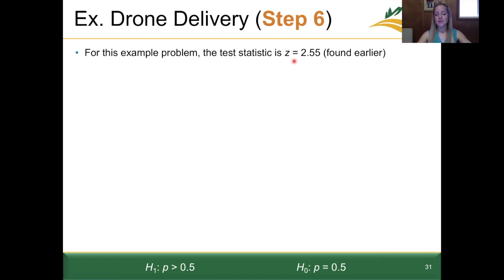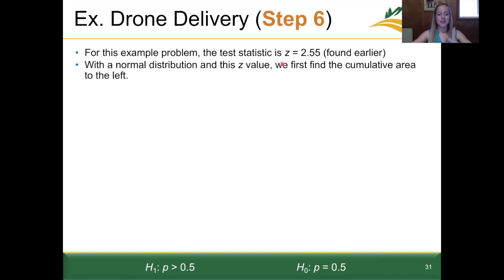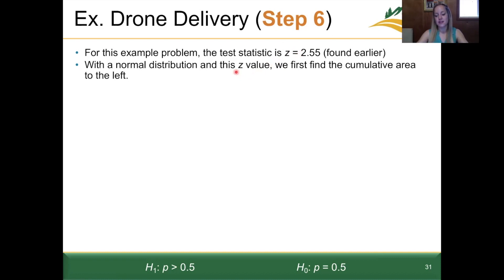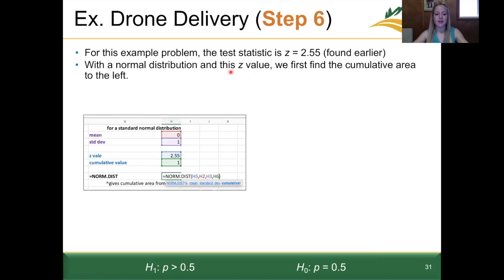In step five, we classified our proportion example as a normal distribution. With the normal distribution and this z-value, we can find the cumulative area to the left of that given z-score, given that we have a standard normal distribution. Knowing that we have a standard normal distribution gives us a value for the mean and the standard deviation. Here in Excel, I wrote my mean and standard deviation specifically for a standard normal distribution — we can use it because we're working in terms of a z-score.